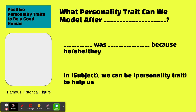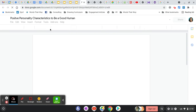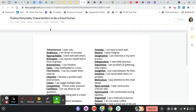Then you go on to the second slide, which asks what personality trait can we model after whoever you're studying. You can click on a linked document that gives you a list of good personality characteristics — just a list of traits to be a good human.